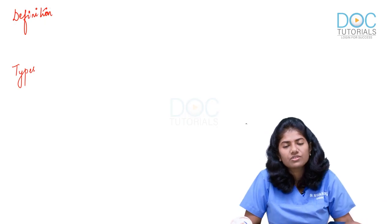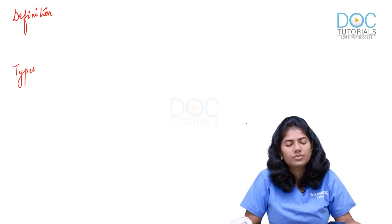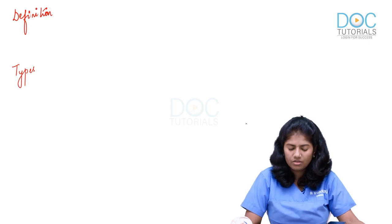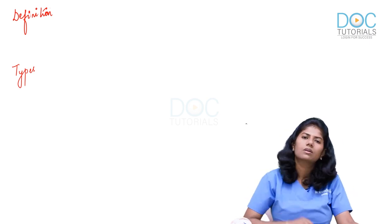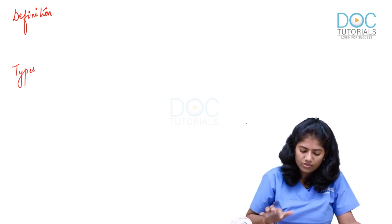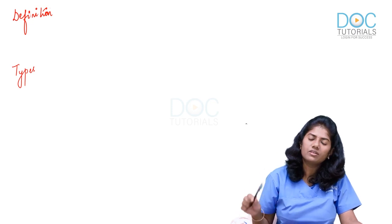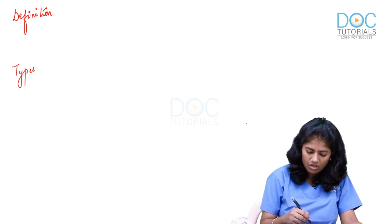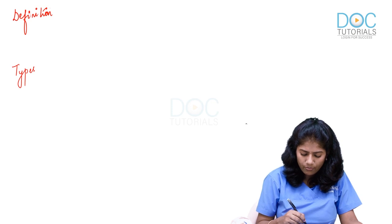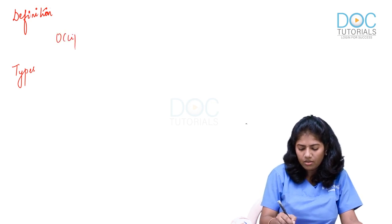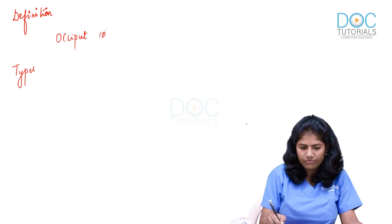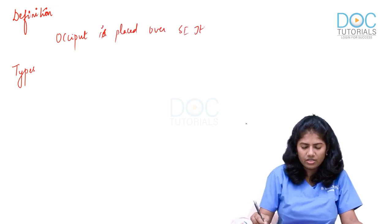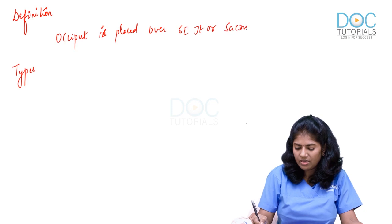The discussion is on occipito-posterior position. Occipito-posterior position is where the occiput occupies any of the posterior quadrants. The occiput is placed over the sacroiliac joint or the sacrum itself.